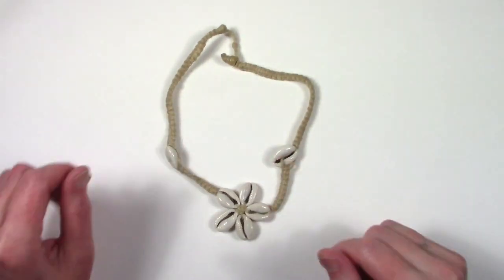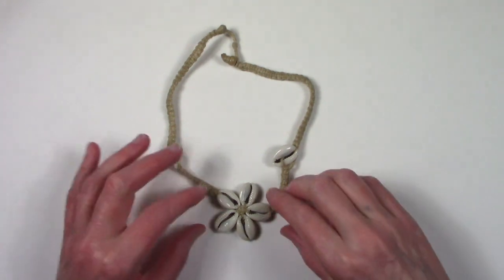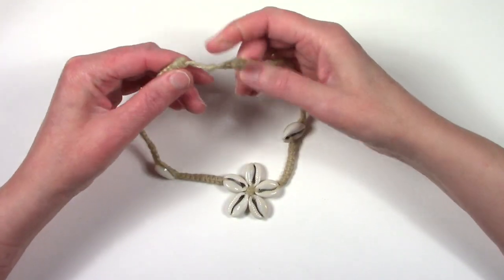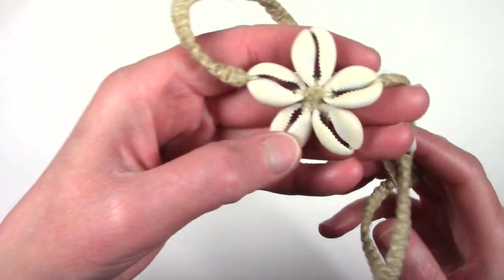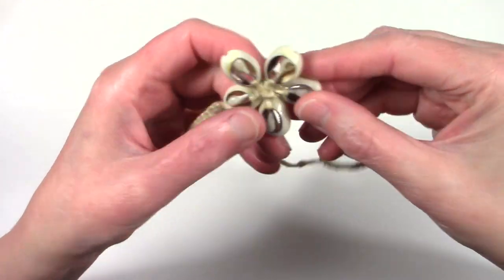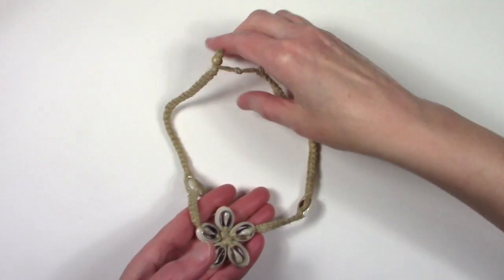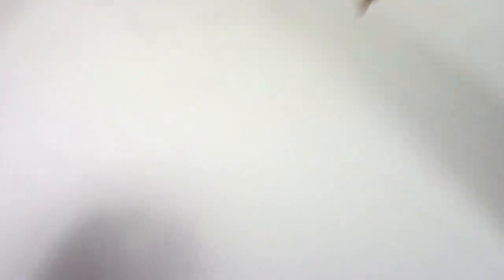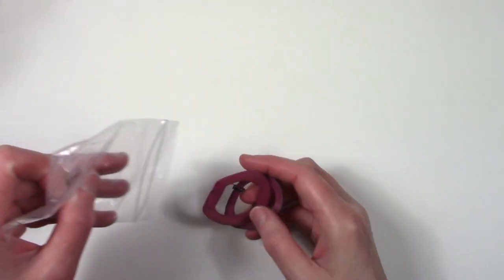Seashell necklace. This is fun with the braiding, good condition. Perfect for the beach. Choker. It's definitely a choker. It's like 14 to 16 inches long.